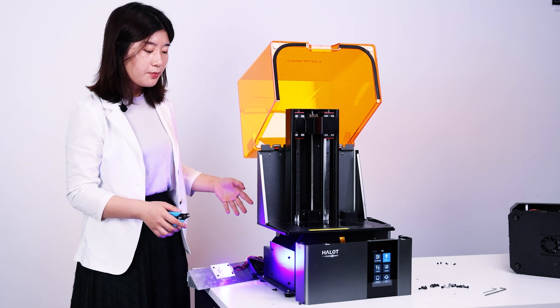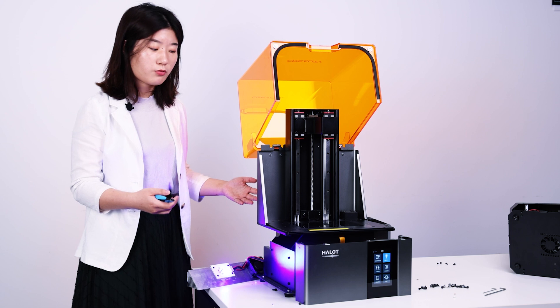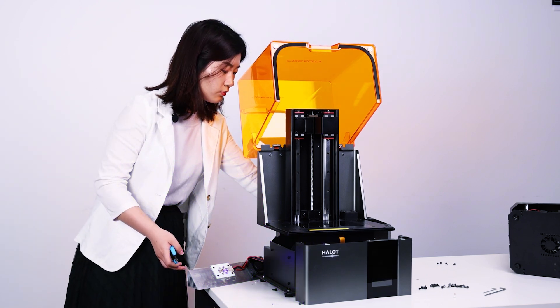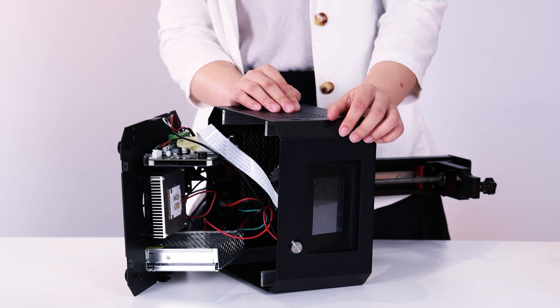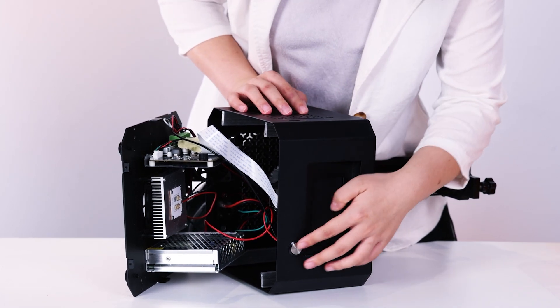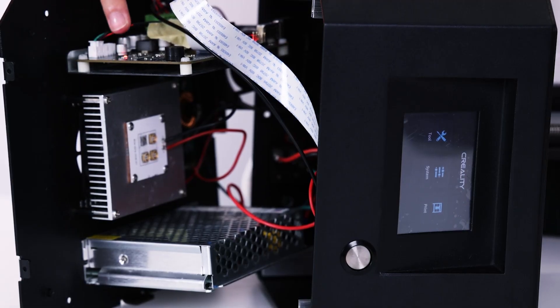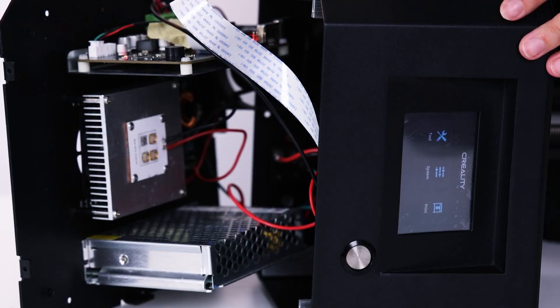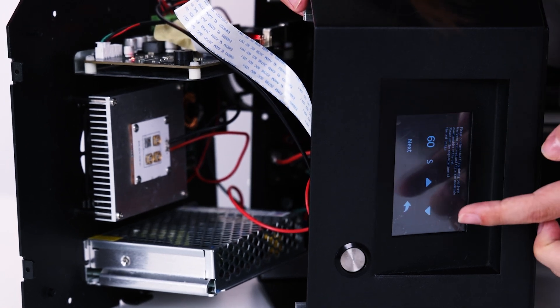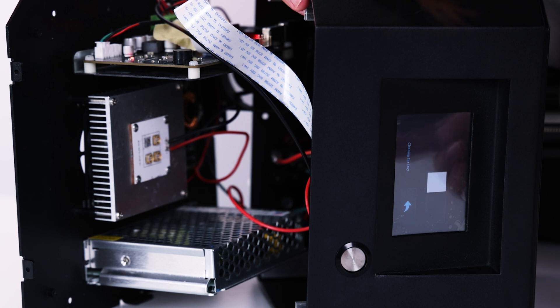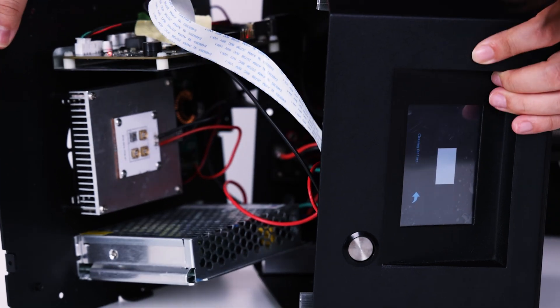And now, we're going to assemble this machine back and see whether it can still print a model. We can see the instruction light is on. And now, we turn on the light source. It should be shining now. Let's see.